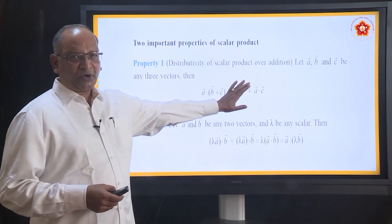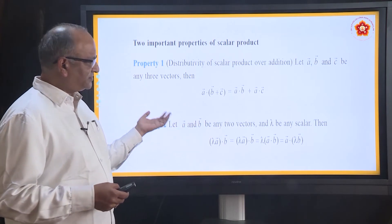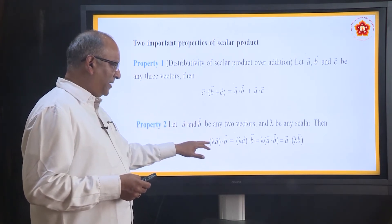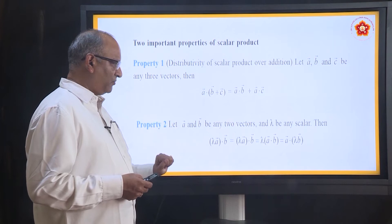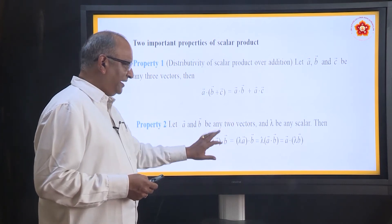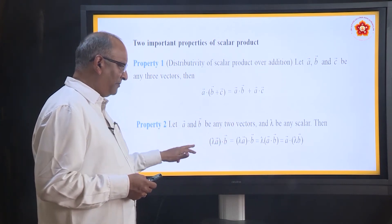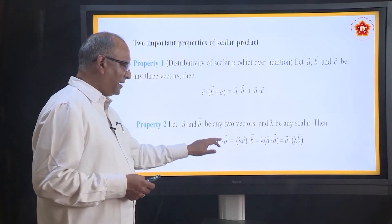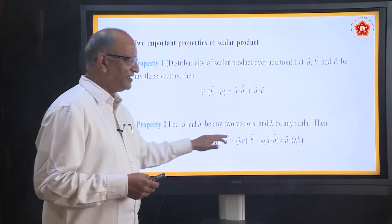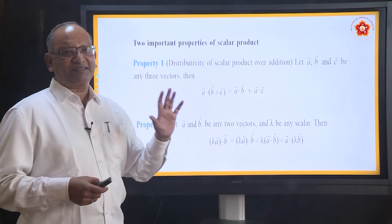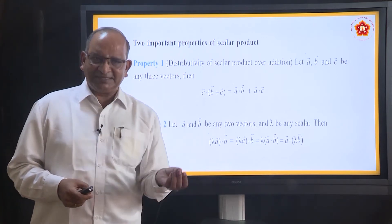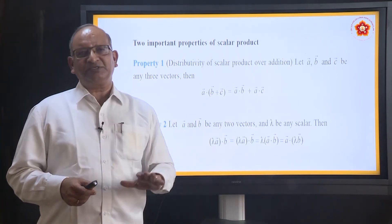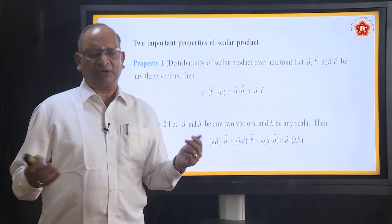This is a good and important property. The second one: lambda A into B can be written in many different ways — you can put lambda outside with A dot B, or you can take lambda with B. Basically he is trying to say that if there is a scalar, it can be kept inside or outside — it does not make any difference to the product.